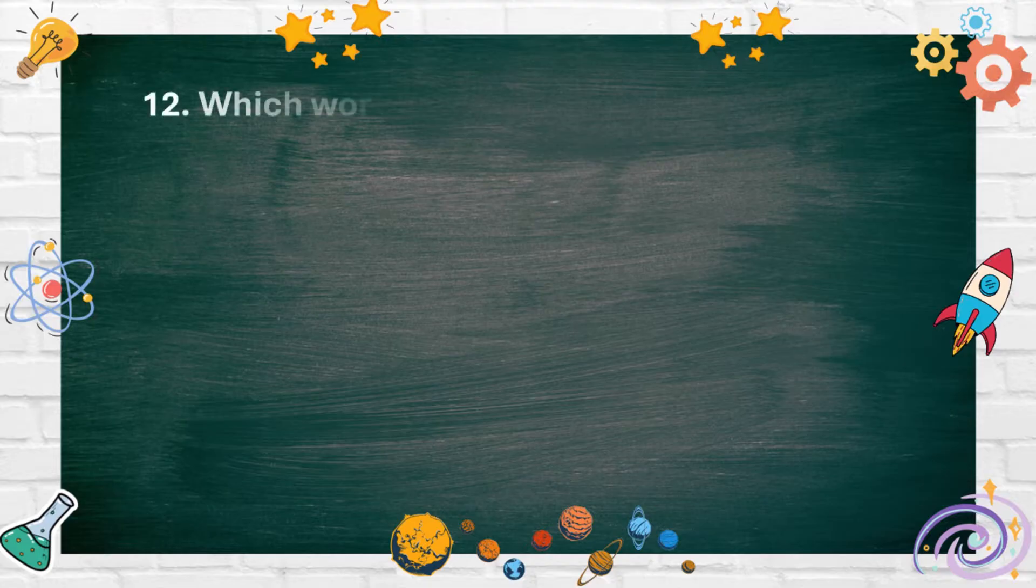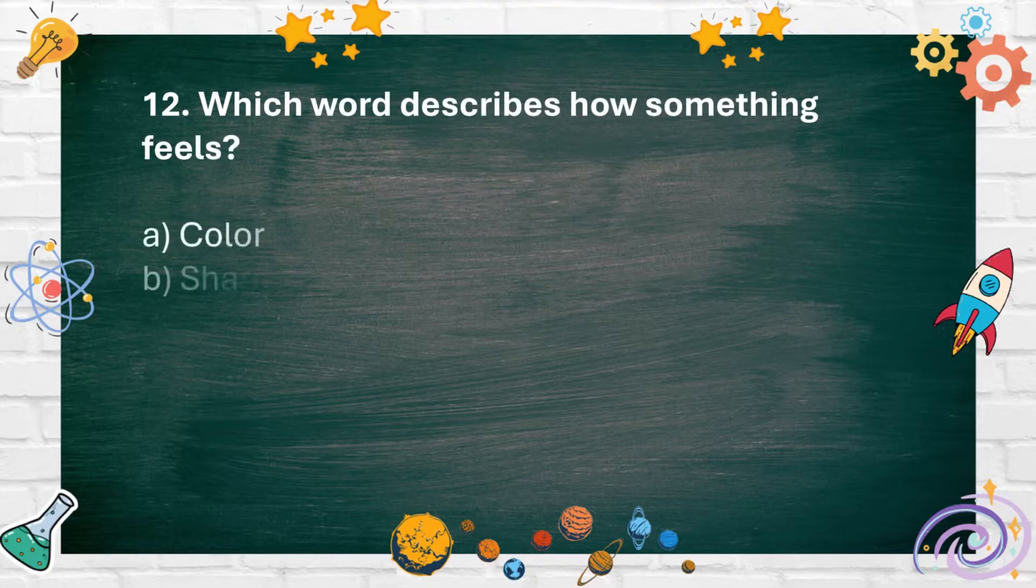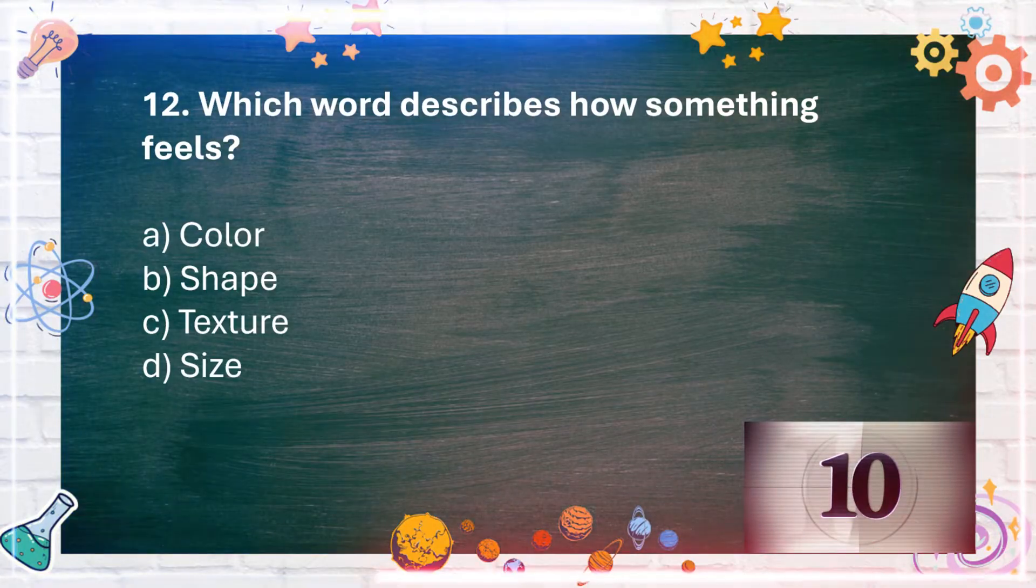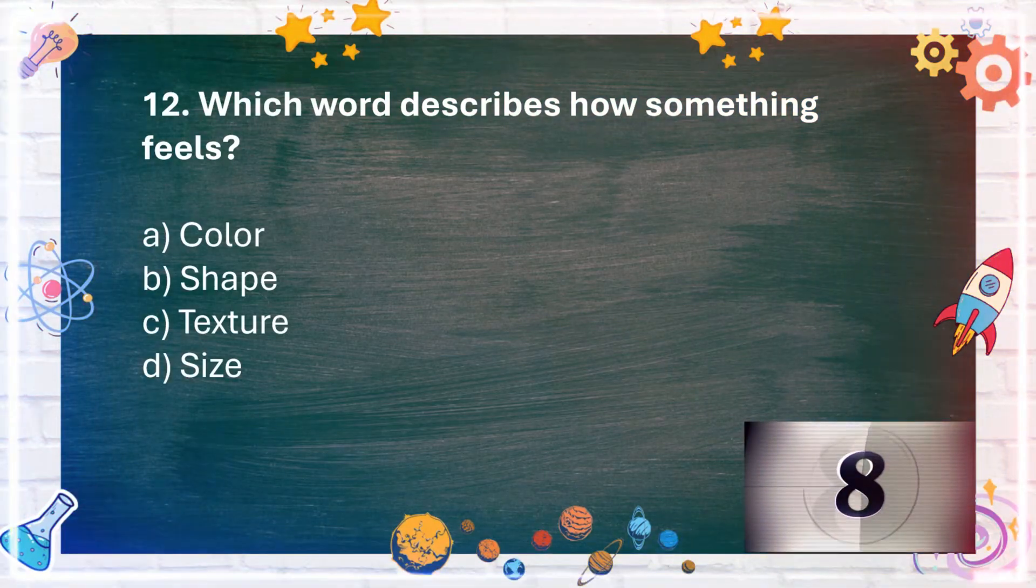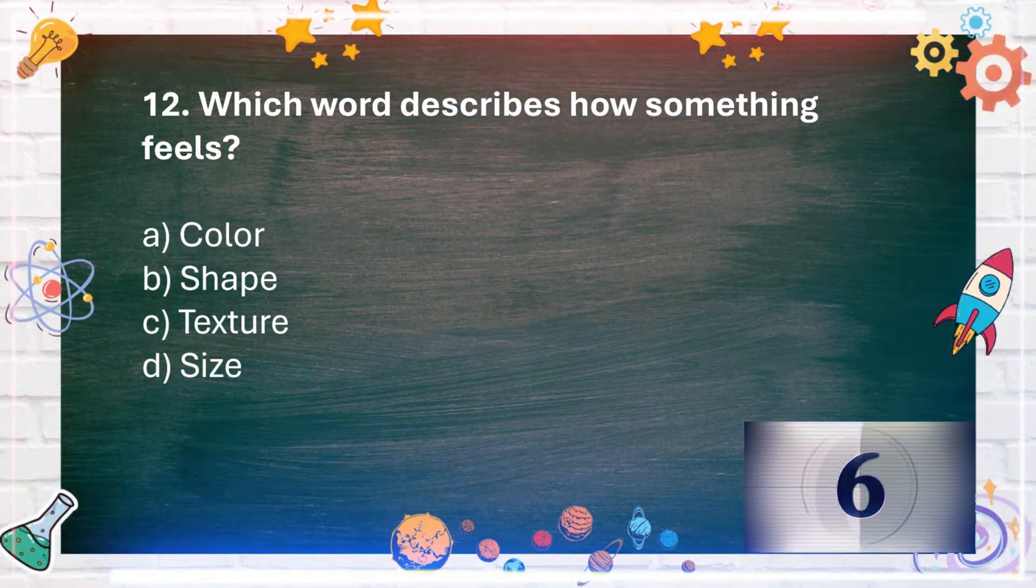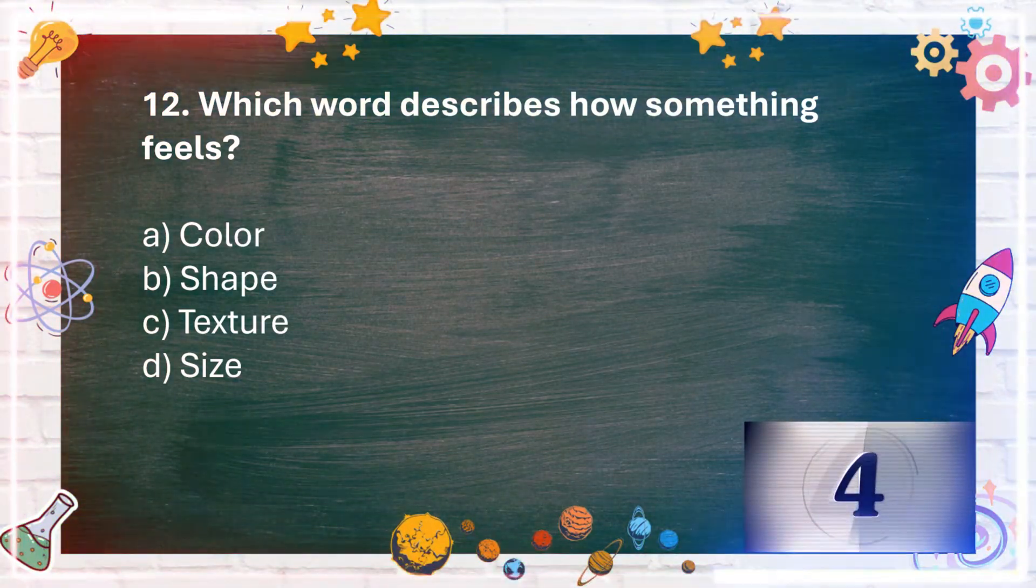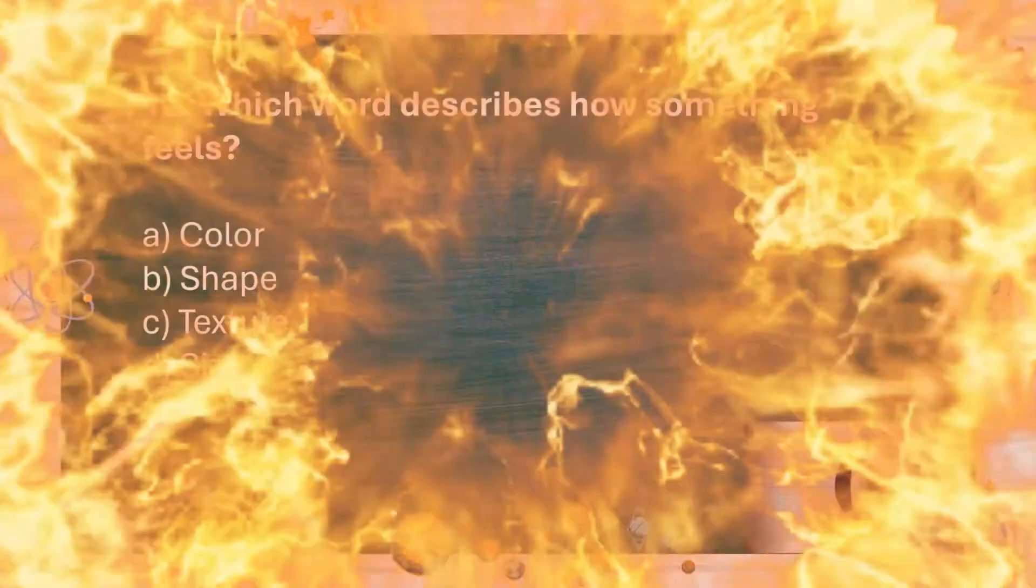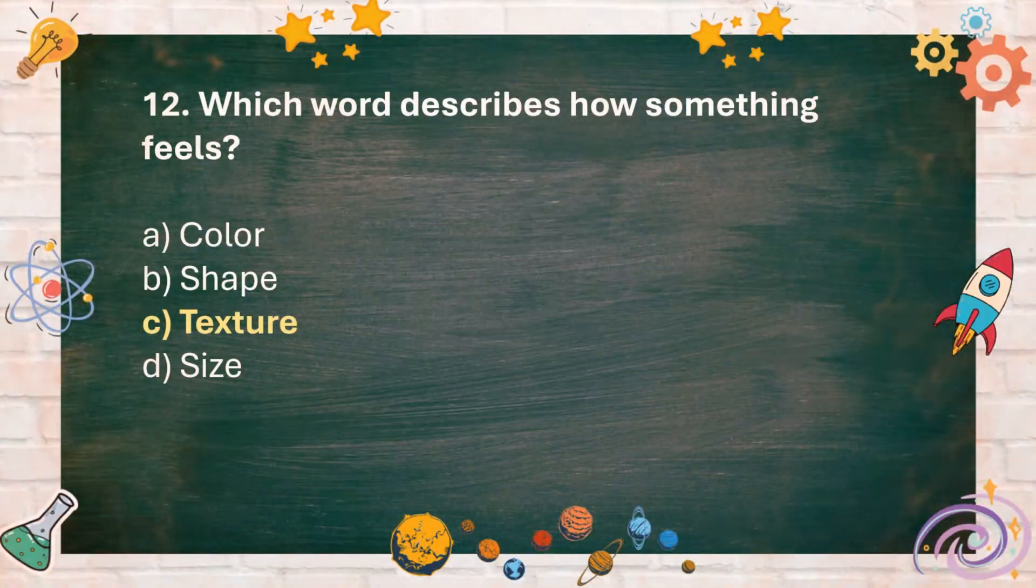Number 12. Which word describes how something feels? A. Color B. Shape C. Texture D. Size. The answer is C. Texture.